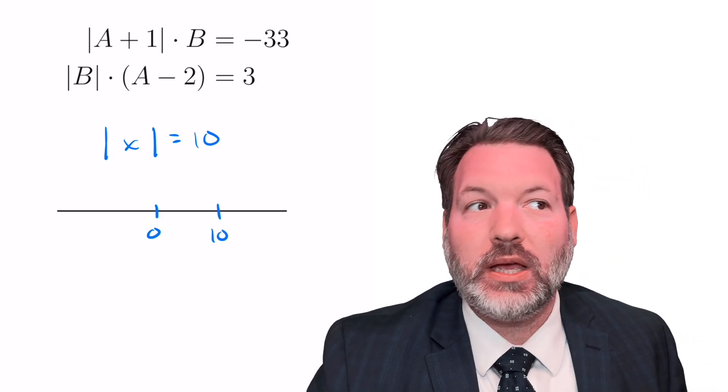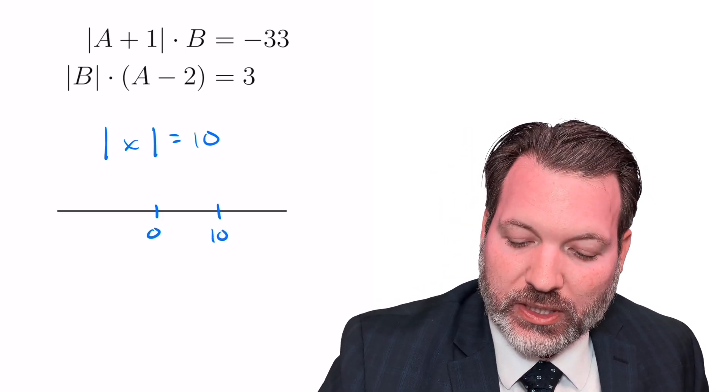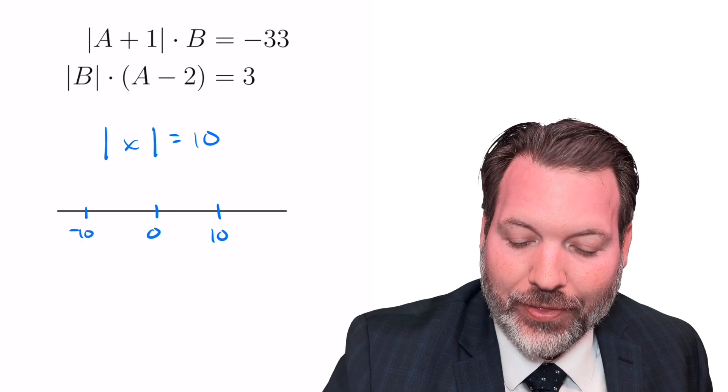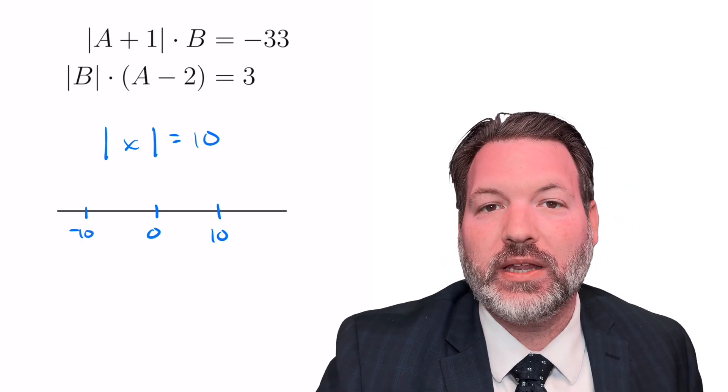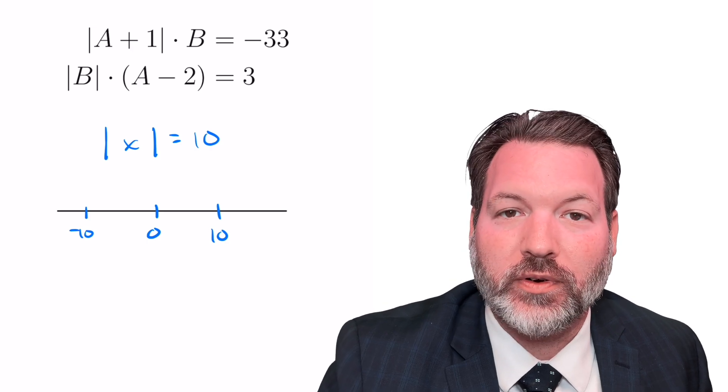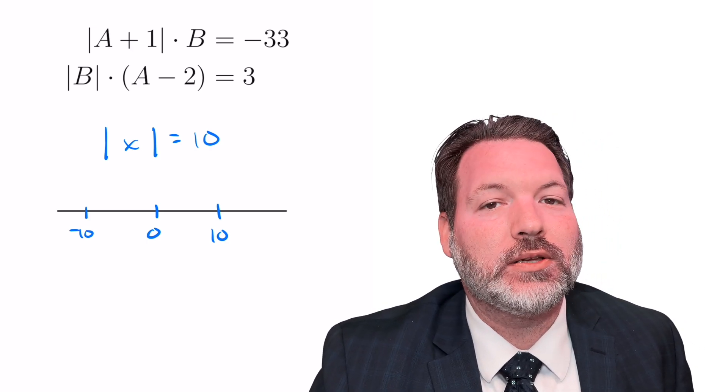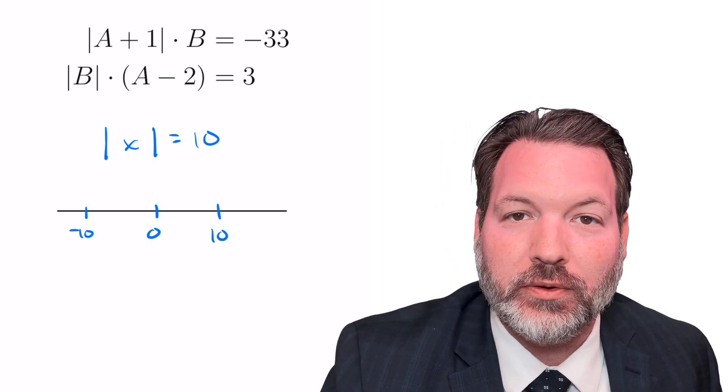Of course, one of those answers is 10 itself. 10 is 10 units away from zero on a number line. But another answer is negative 10. Distance is always positive, so negative 10 is also 10 units from zero. And since that distance is always positive, so is absolute value.